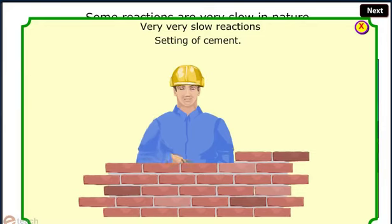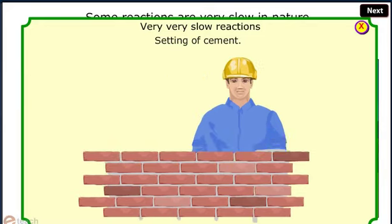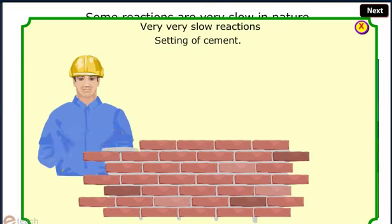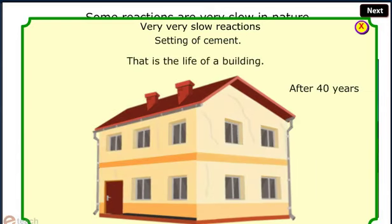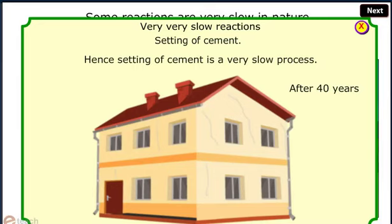Very very slow reaction. The example of such very slow reaction is setting of cement. It takes nearly 40 years to settle down. After 40 years, the building shows cracks. That is the life of a building. Hence, setting of cement is very slow process.